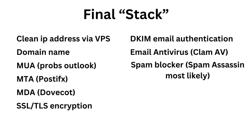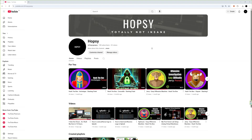To summarize, here's the final stack: a clean IP address via VPS, a domain name from Porkbun, the MUA which I'll use Outlook for, the MTA which is Postfix, the MDA which is Dovecot, SSL/TLS encryption with a certificate, DKIM for email authentication, ClamAV for email antivirus, and SpamAssassin as the spam blocker — though Mailcow may use something different so that might change.